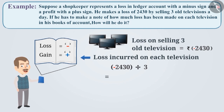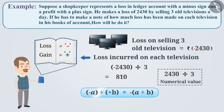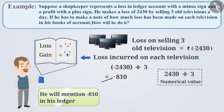To obtain the quotient, first we divide the numerical value of the integers, that is the value without the sign. Doing so, we get the numerical value of the quotient as 810. As you may know, the quotient obtained by dividing a negative integer by a positive integer is negative. Therefore, when minus 2430 is divided by 3, the quotient will be minus 810. The minus sign shows that the shopkeeper has incurred a loss of Rs. 810 on each television. Hence, he will mention minus 810 in his ledger.